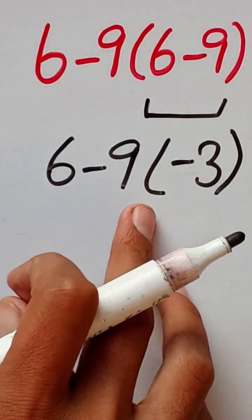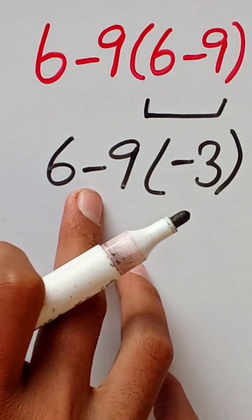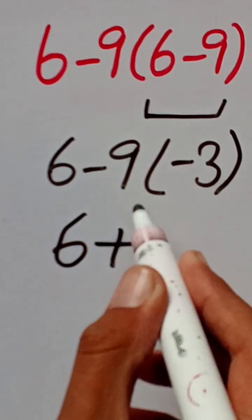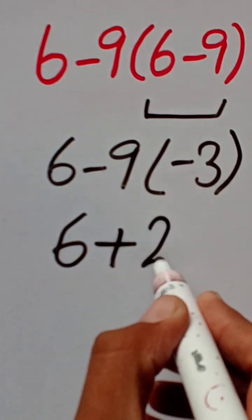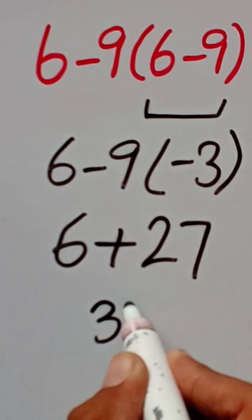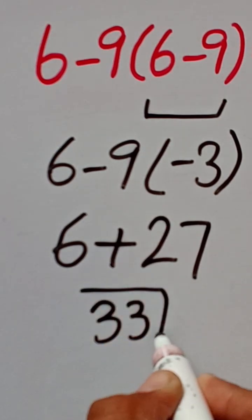multiplication has higher priority than subtraction. So 6 minus 9 times negative 3: negative times negative equals positive, so 9 times 3 equals 27. Then 6 plus 27 equals 33. This is the final answer.